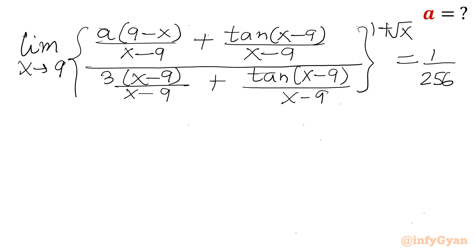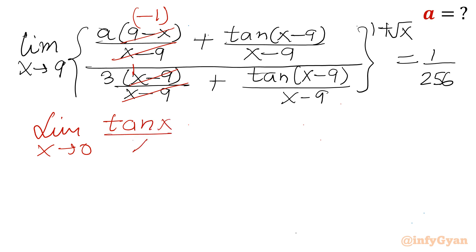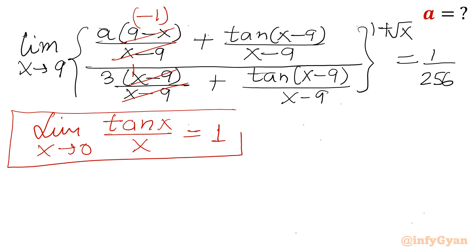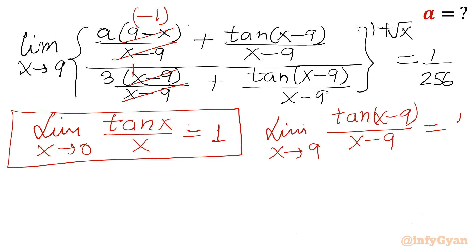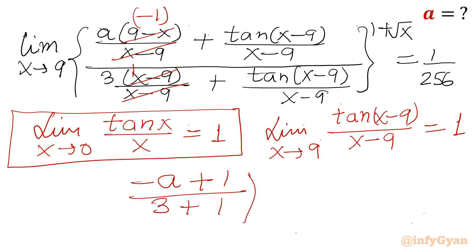From the first term, (9 − x)/(x − 9) simplifies to −1. We know that limit x tending to 0 of tan x / x equals 1, so applying this as x tends to 9, (tan x − 9)/(x − 9) becomes 1. So the expression becomes (−a + 1) over (3 + 1), and as x tends to 9, the power 1 + √x tends to 1 + √9 = 1 + 3 = 4. So the power is 4, and RHS is 1/256.